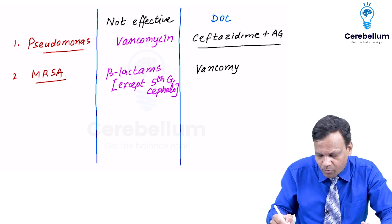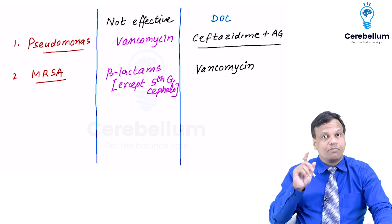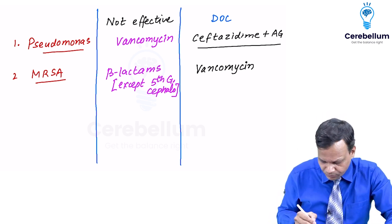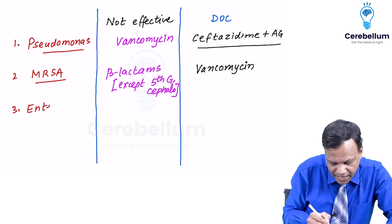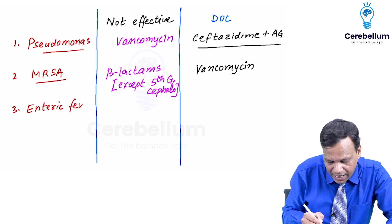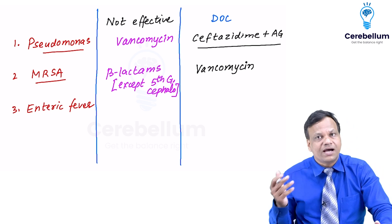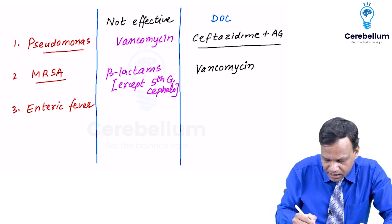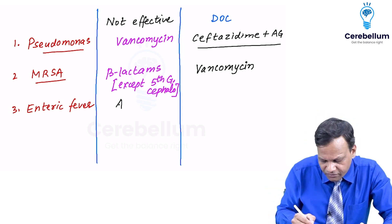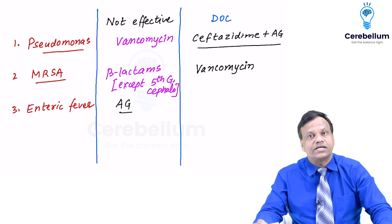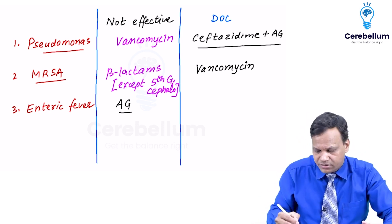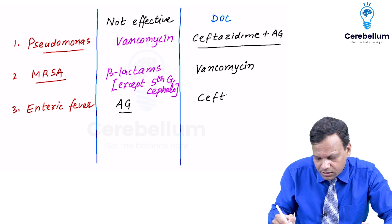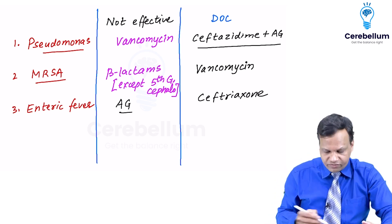Note carefully: vancomycin is not for Pseudomonas, but it is the drug of choice for MRSA. Third, which drug is not effective against enteric fever? Enteric fever is caused mostly by Salmonella, and the drug not effective is aminoglycoside. Remember, aminoglycosides are not for Salmonella. The drug of choice for enteric fever is ceftriaxone.